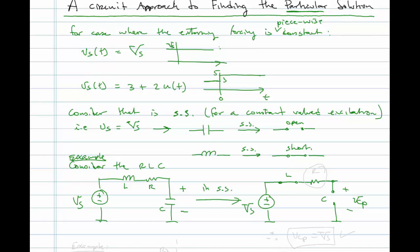And here it's trivial. We see that there's no place for any current to flow, and so there's no voltage drop across R. So therefore, Vc of P is equal to Vs, as we had found when we guessed at a constant K and plugged it into the differential equation.